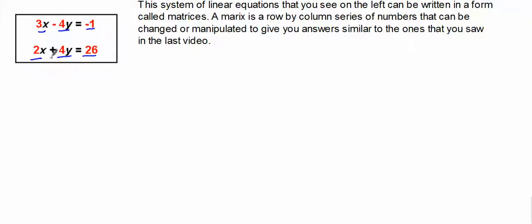So I can write this as a matrix. If I were to take this system of linear equations and write it as a matrix, we would write this in the following fashion: 3, negative 4, and negative 1. Then we would go 2, 4, and 26.